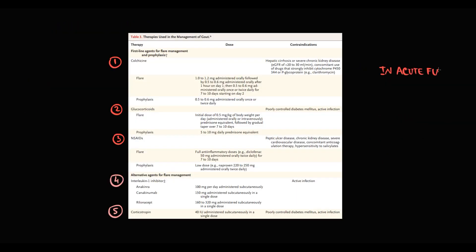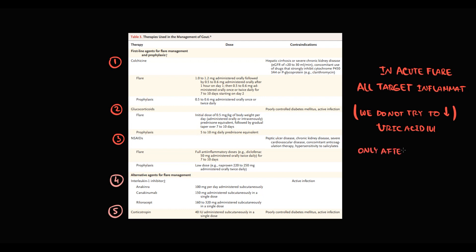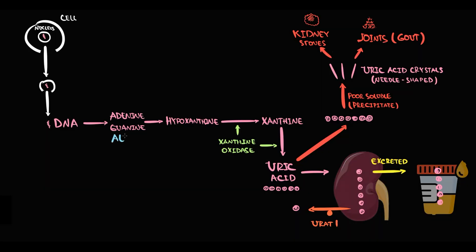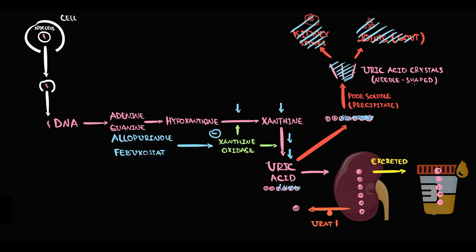The less severe the inflammation, the less severe the clinical symptoms. In acute flare our goal is to decrease the severity of inflammation. In the acute phase we do not try to decrease uric acid level — we will do that only after resolution of inflammation. In chronic phase, our goal is to decrease uric acid level. By far the most popular drugs are xanthine oxidase inhibitors: allopurinol and febuxostat. Both inhibit xanthine oxidase enzyme, and the lower the function of xanthine oxidase, the lower the uric acid production, progressively decreasing uric acid in the blood.